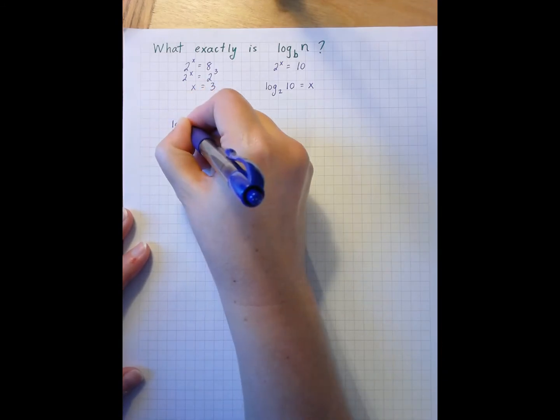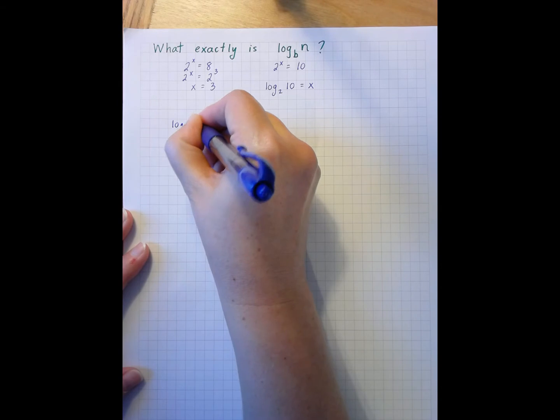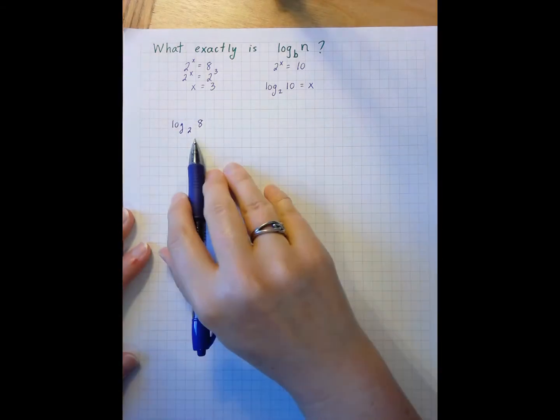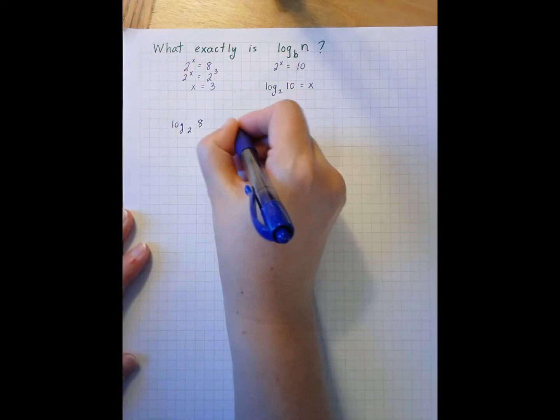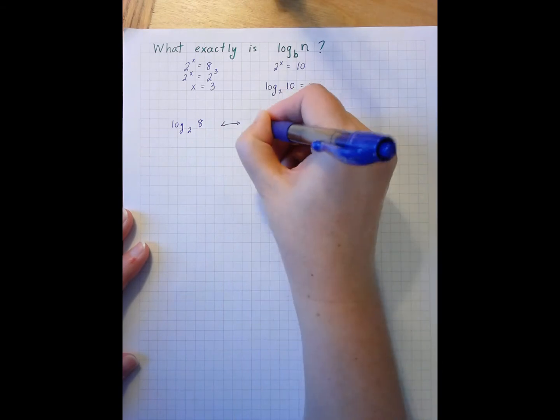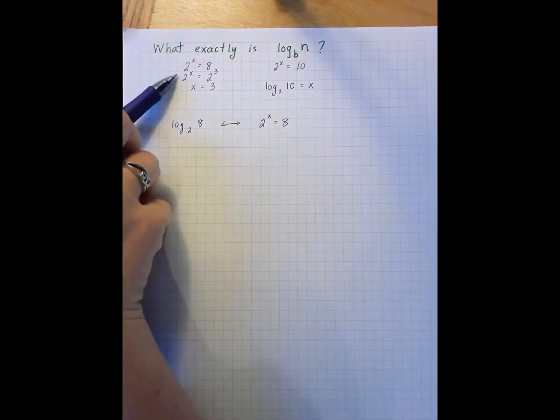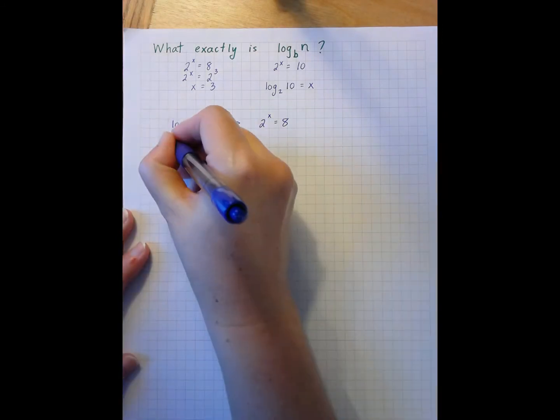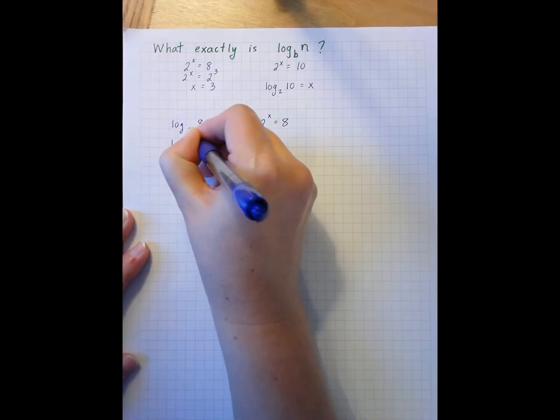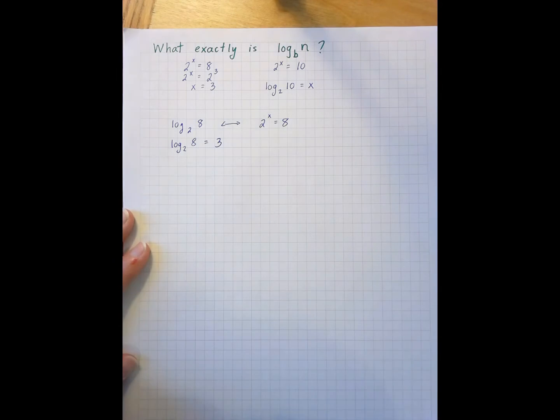So if we look at the example log base 2 of 8, log base 2 of 8 is equivalent to 2 to some power equals 8, which we've just done up above here. So we know that log base 2 of 8 equals 3, and I can place that on a number line.